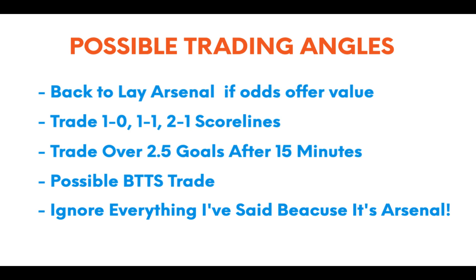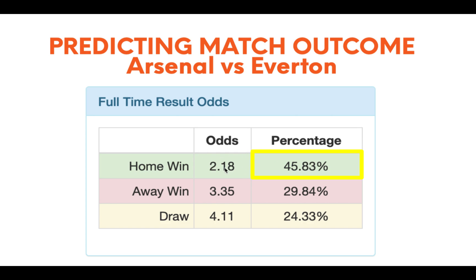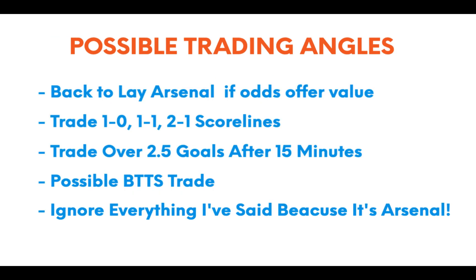Now we look at possible trading angles. It's all well and good having these figures, but what do we use them for? I don't advise blindly backing Arsenal to win or blindly backing those three scorelines. This is a model to use as a tool in your trading, not something to trade purely on because it lacks human factors — injuries, suspensions, team motivations, who needs the points more, fixture congestion, and squad rotation. Use it as a tool: back or lay Arsenal if the odds offer value. 45.83% equates to 2.18 in odds, so getting odds above 2.18 represents value.